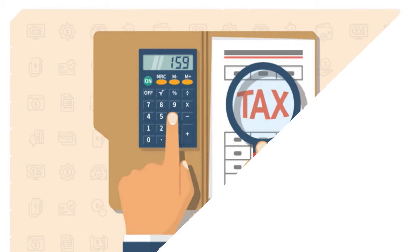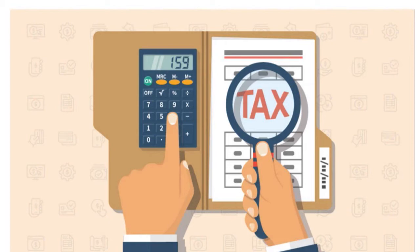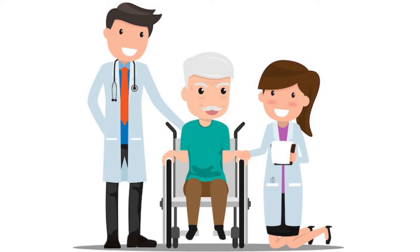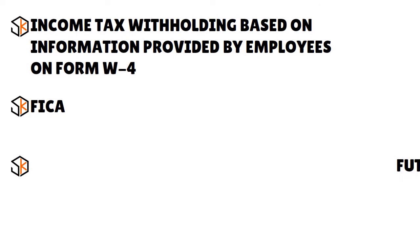FICA is comprised of Social Security and Medicare taxes and is paid equally by employers and employees. The Social Security portion is referred to as Old Age, Survivors, and Disability Insurance (OASDI) and provides benefits to retirees, spouses, former spouses, dependent children, and disabled individuals under retirement age. The Medicare portion allows those age 65 and older, plus certain other individuals, to qualify for Part A Medicare coverage at no additional cost, plus coverage through Parts B, C, and D for an additional premium.